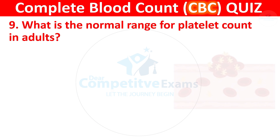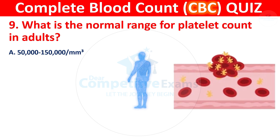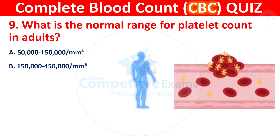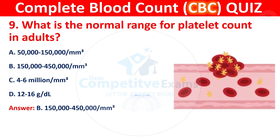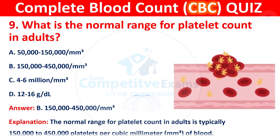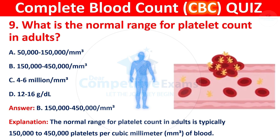Question 9: What is the normal range for platelet count in adults? Your options are 50,000 to 1,50,000; 1,50,000 to 4,50,000; 4 to 6 million; or 12 to 16 million. The correct answer is 1,50,000 to 4,50,000 per cubic millimeter.